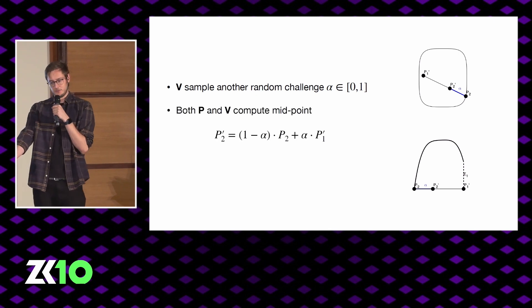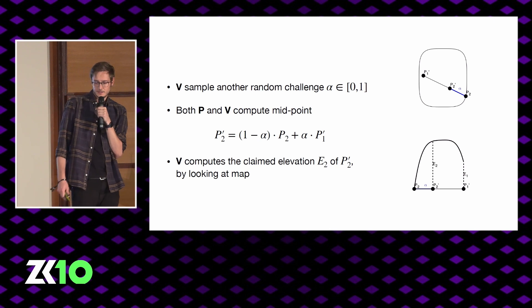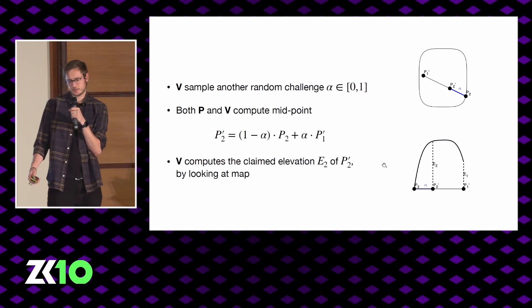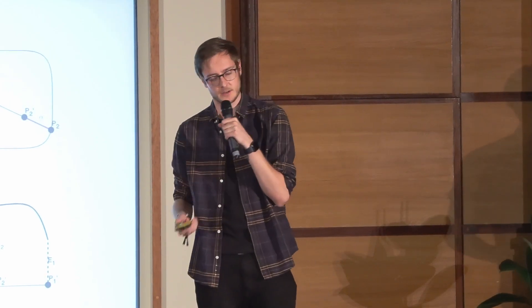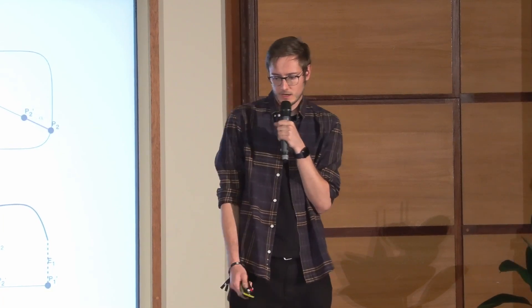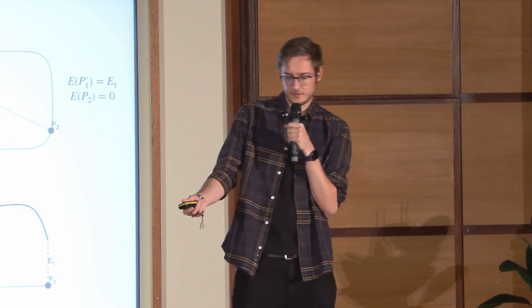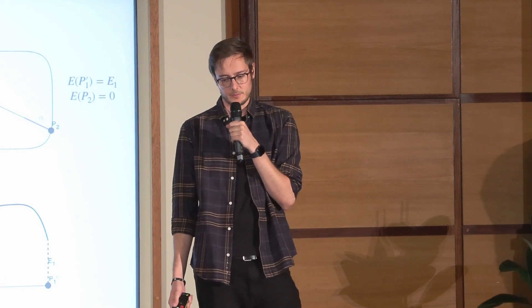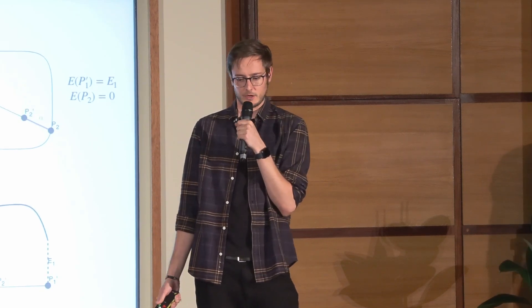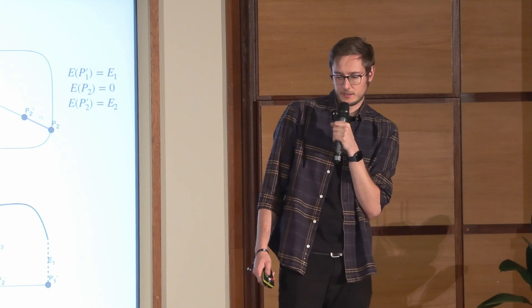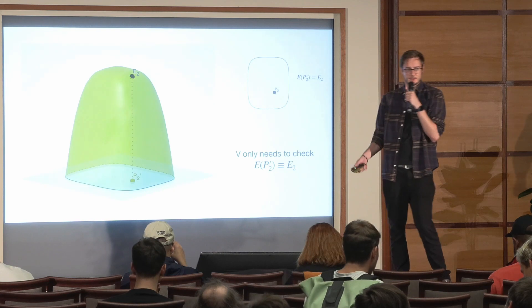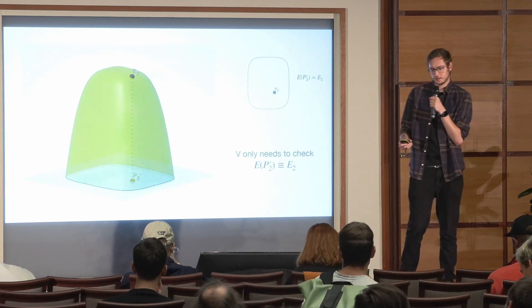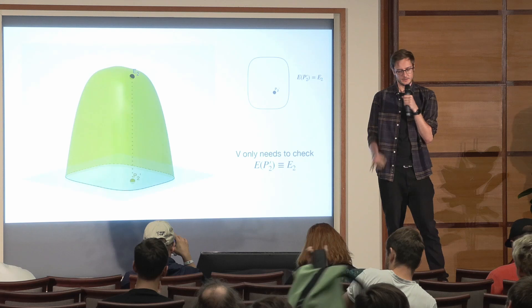This defines again a new point P2 prime. And again the verifier just needs to look at the elevation map, which is not trusted at this point, but it allows the verifier to at least check the elevation and obtain the elevation of a random point on this island. So again, from the prover's perspective, we've got the elevation map drawn here, a new random point P2 prime is sampled, and we compute the elevation like this.